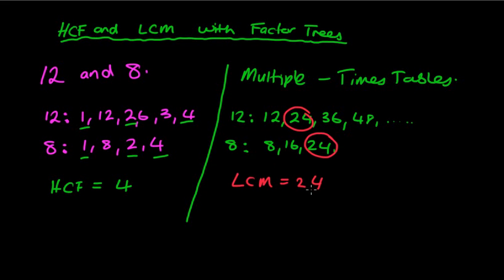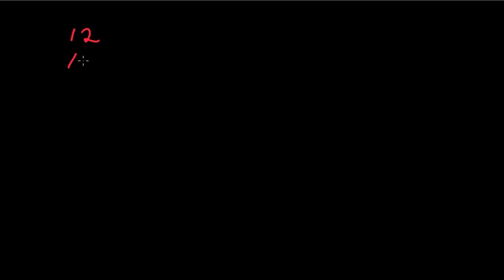But when we get to numbers like 120 or 240, there are going to be a lot of different factors, so it'll be difficult to find the highest common factor and likewise the lowest common multiple. We're going to use factor trees to assist us. We'll start with 12 and 8 first, then move on to more challenging numbers.